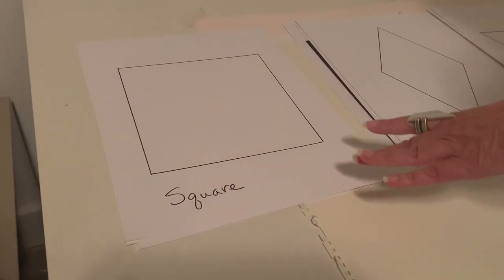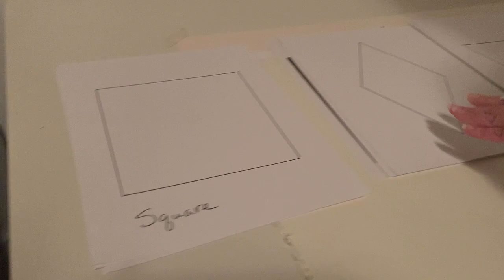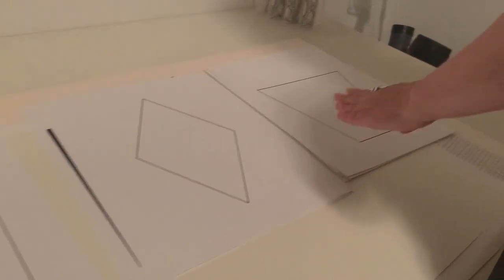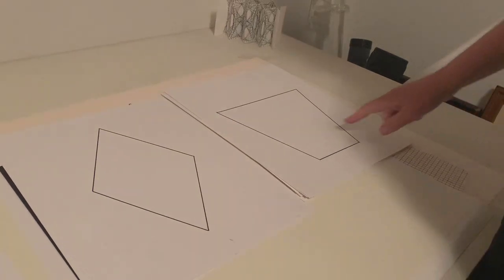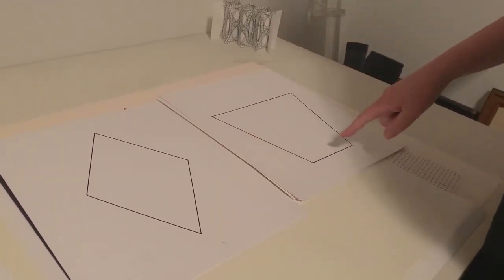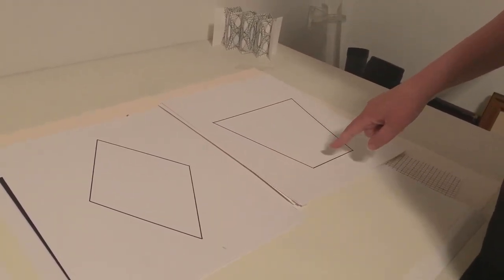I chose three quadrilaterals to work with: the square, the rhombus, and a trapezoid. This particular trapezoid I call a trisosceles trapezoid because three of the sides are equal and I made the fourth side half length.